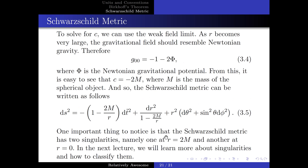One important thing to notice is that the Schwarzschild metric has two singularities, namely one at R equals 2m and another at R equals 0. In the next lecture, we will explore what these singularities mean and how to classify them. I hope you've learned something from this lecture. See you next time.